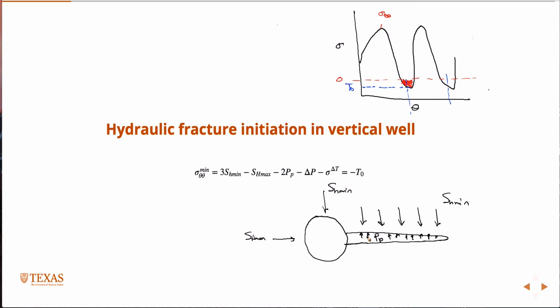It takes less energy to open a fracture against the pressure of sh min, and that's why in vertical wells you always get fracture growth at sh max. Again, this is excluding any heterogeneity, any natural fractures, lots of other complexity. This is a very simplified example.